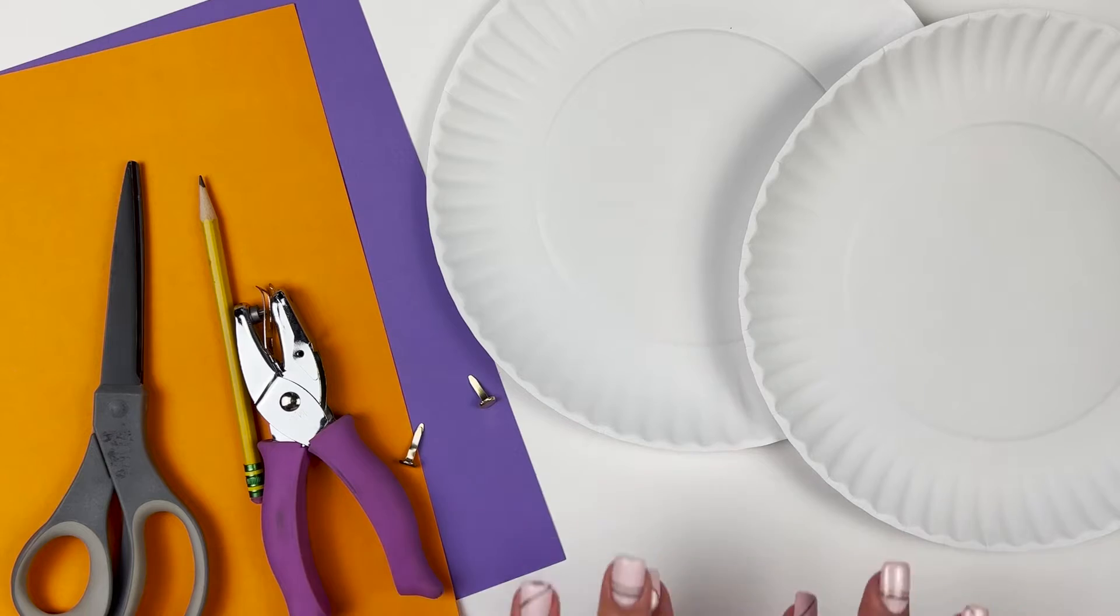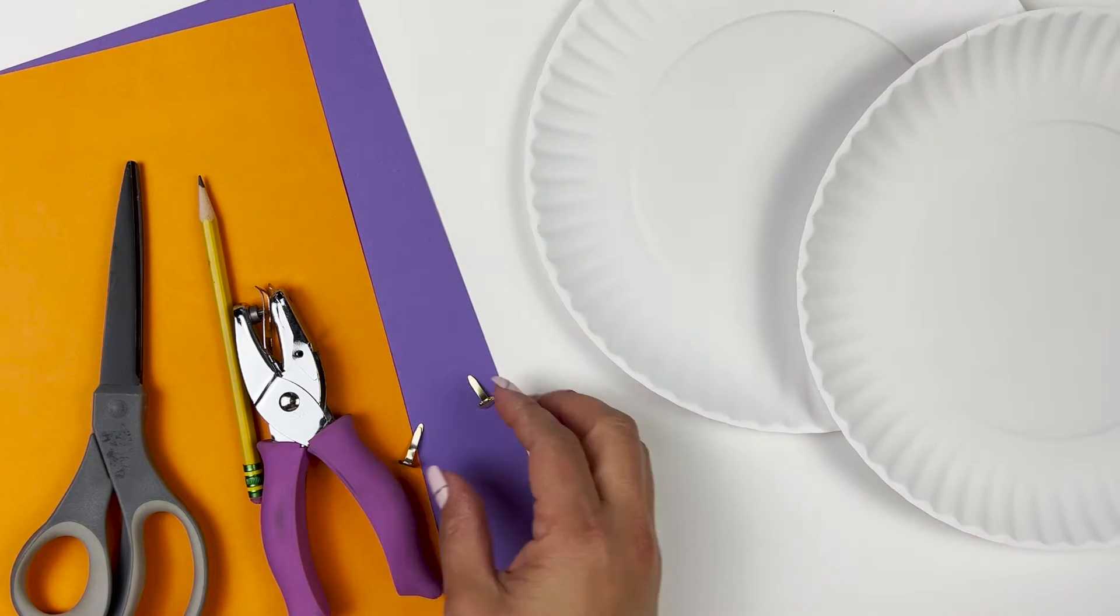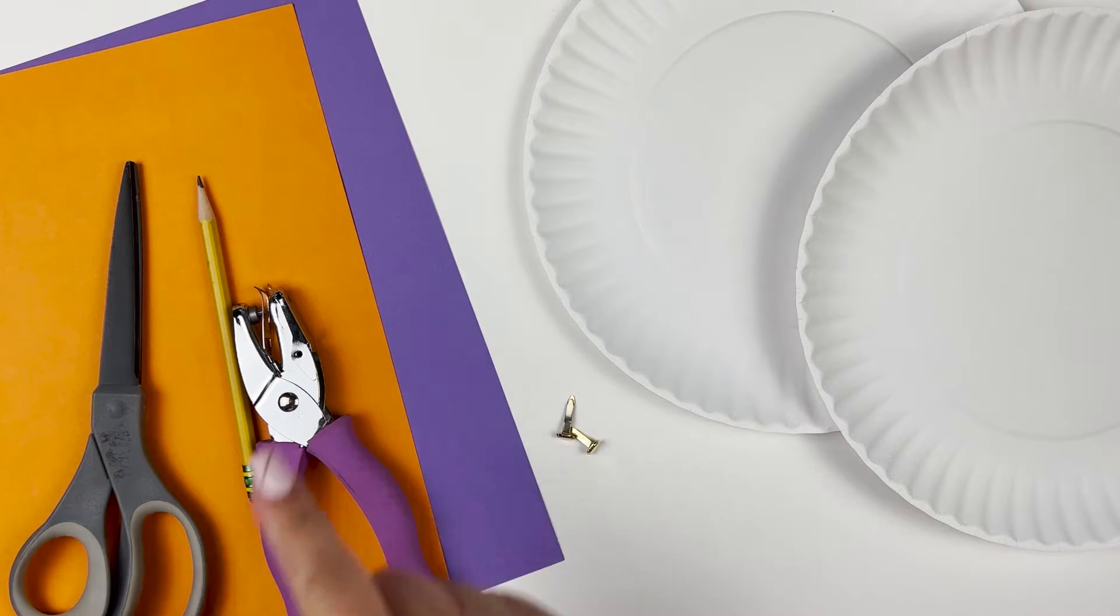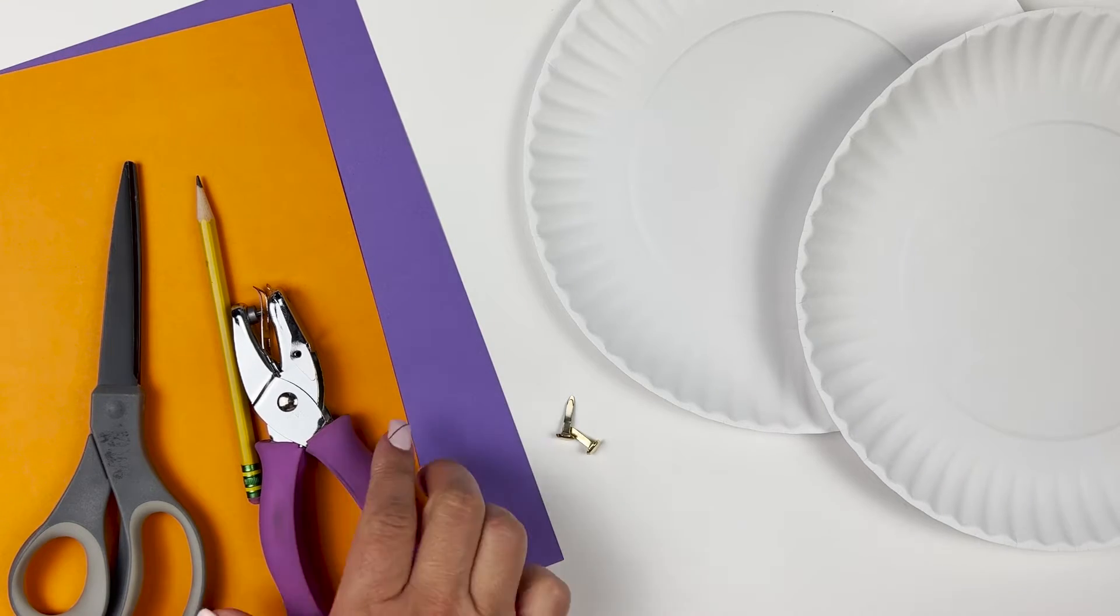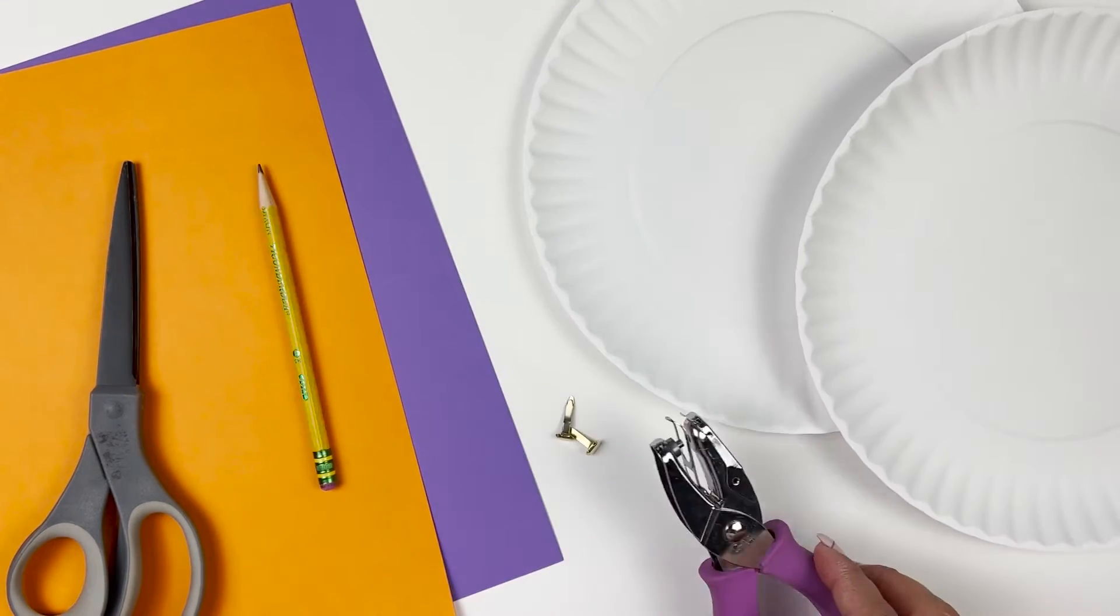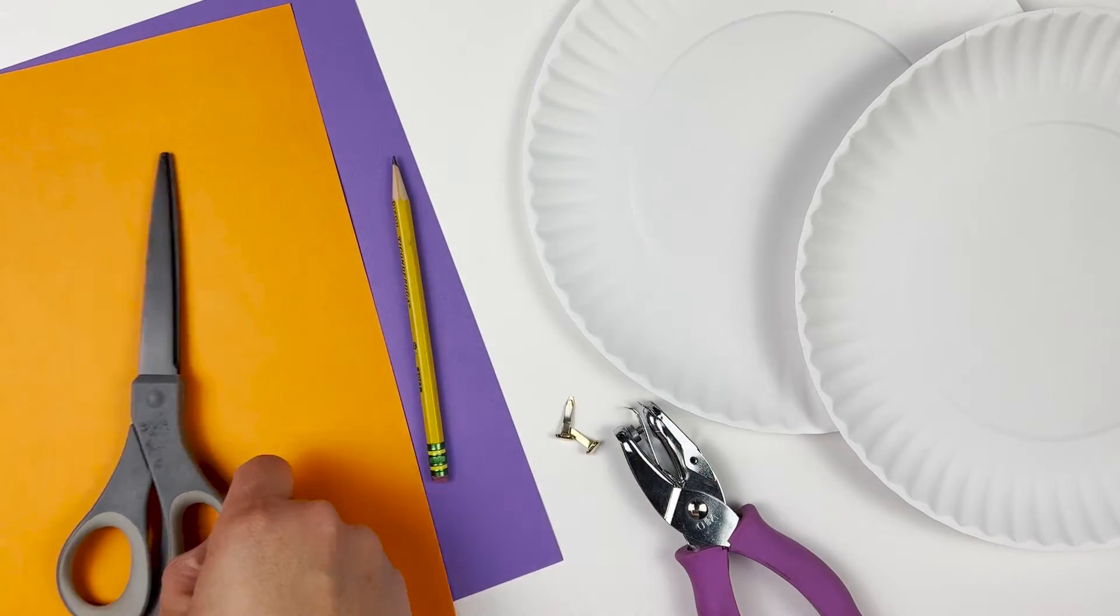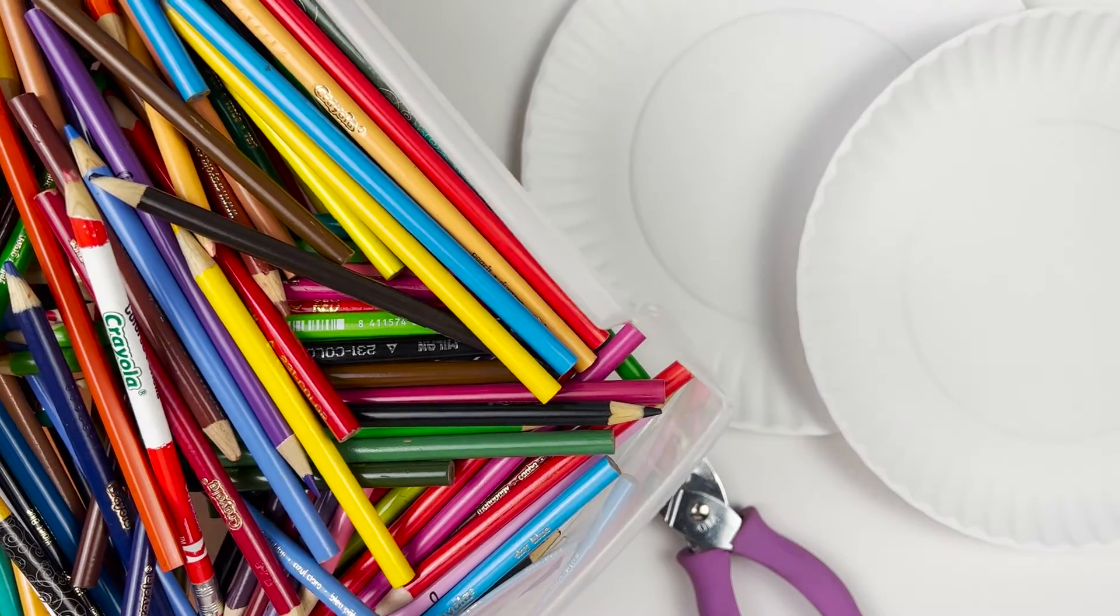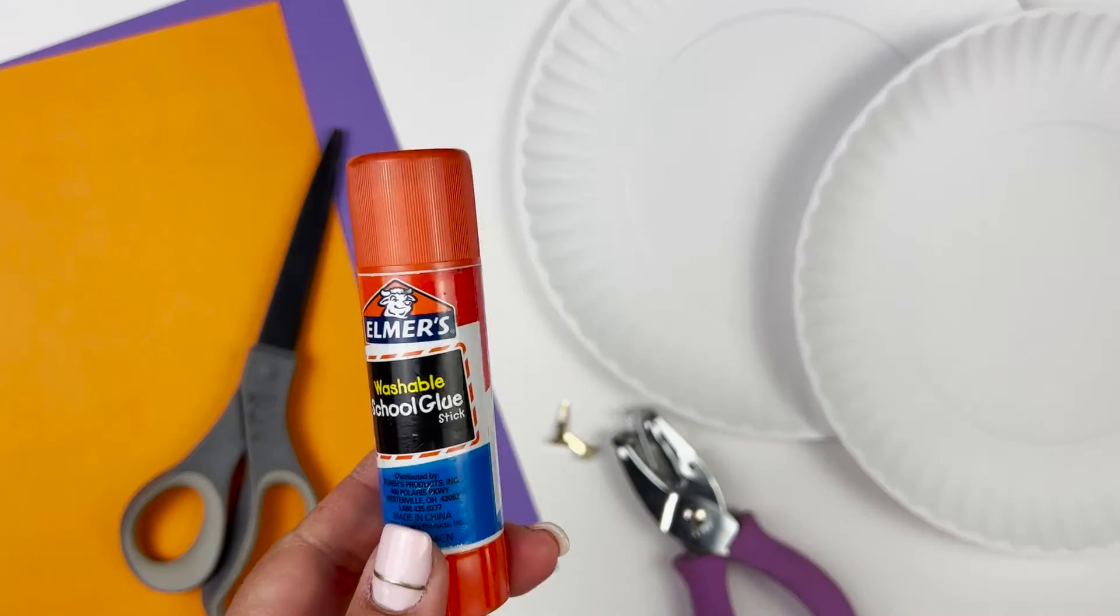For today's craft we're going to need two paper plates, two paper fasteners, a colored sheet of paper and another colored sheet of paper. You can have the same or different kinds. A hole punch, a pencil and scissors and some colored pencils and a glue stick.